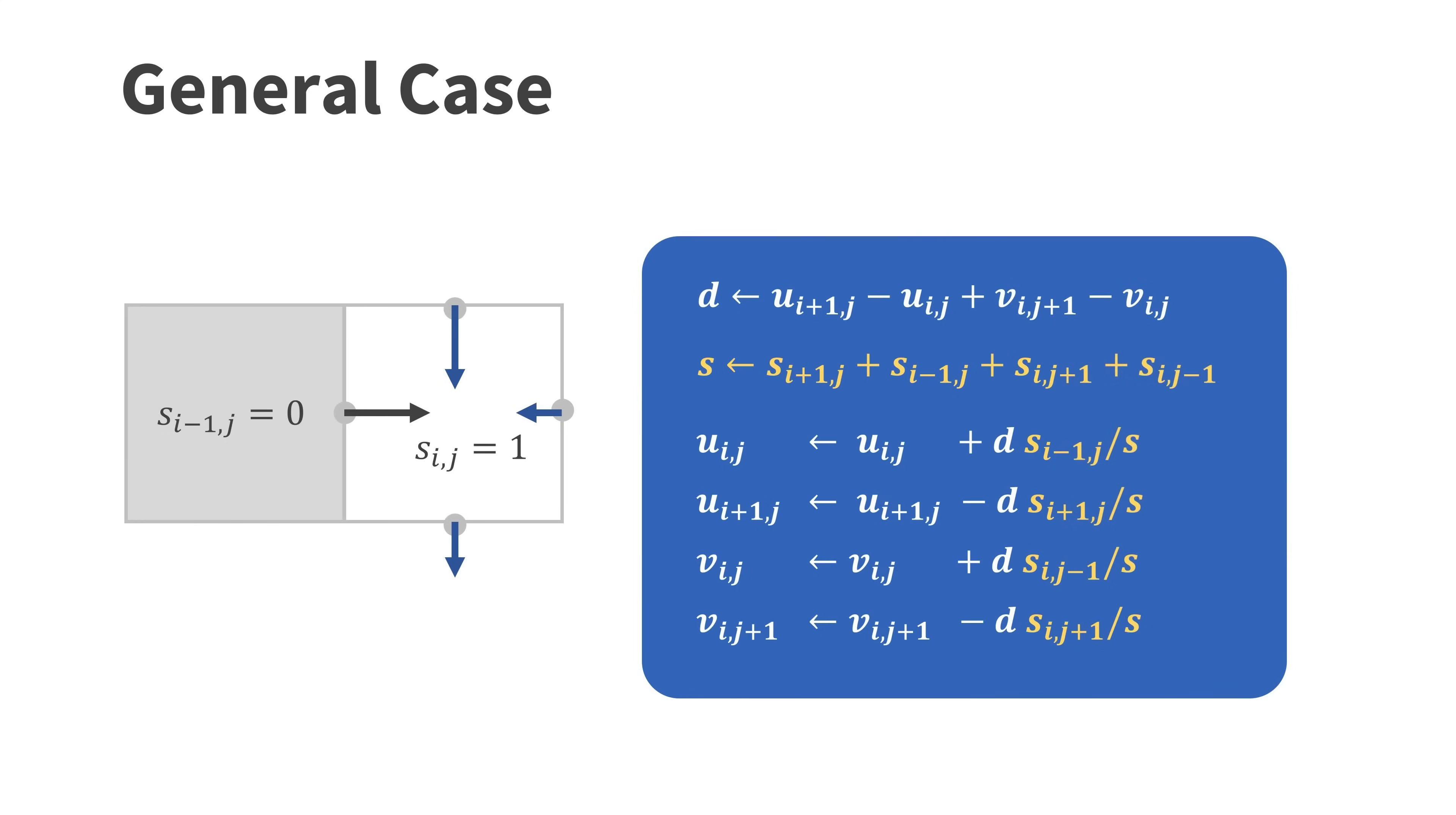The method can also be used to simulate a turbine that pushes air into a wind tunnel as I showed you in the beginning. For the general case we store a scalar value s in each cell and set it to zero for obstacles and to one for fluid cells. Here you see the general updates.